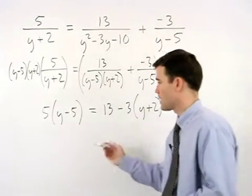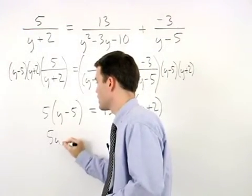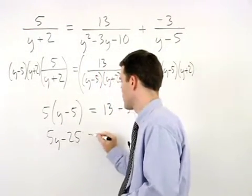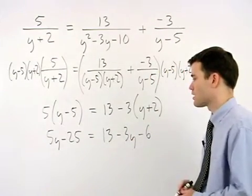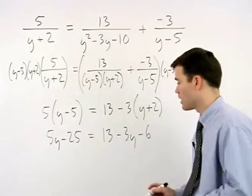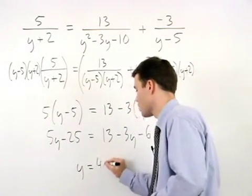Distributing through the parentheses, we have 5y minus 25 equals 13 minus 3y minus 6. And solving from here, we find that y equals 4.